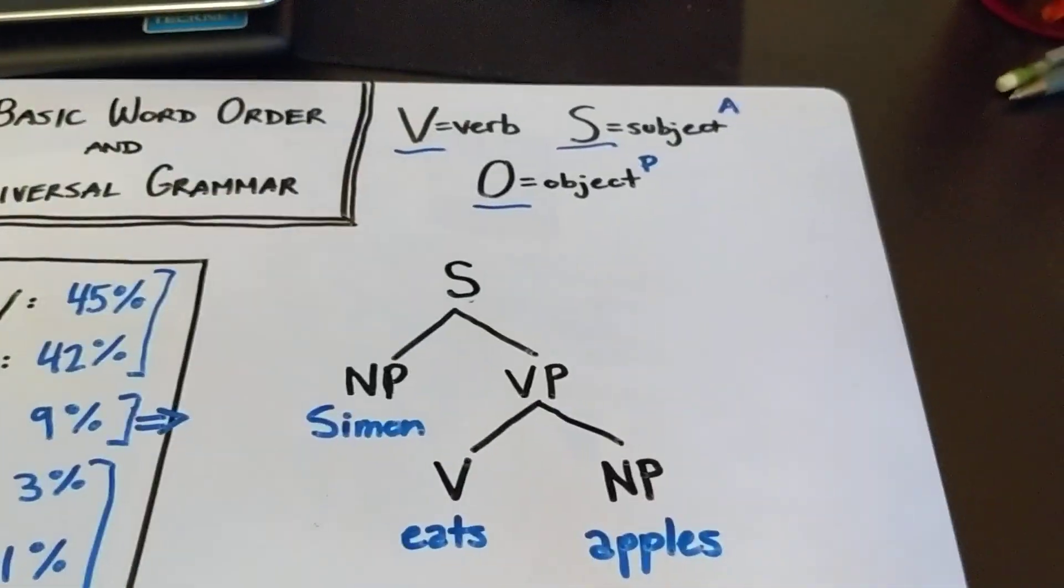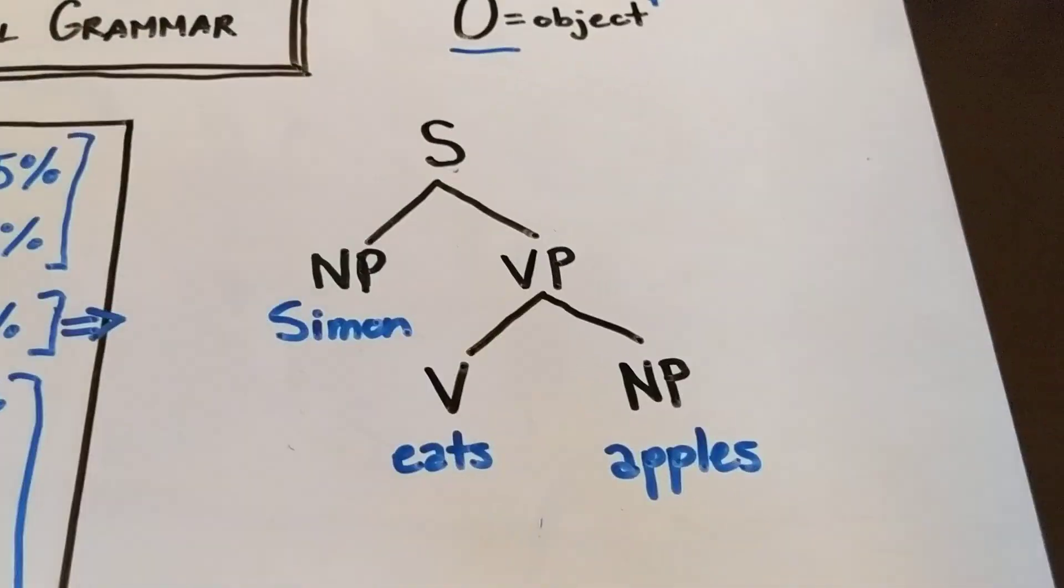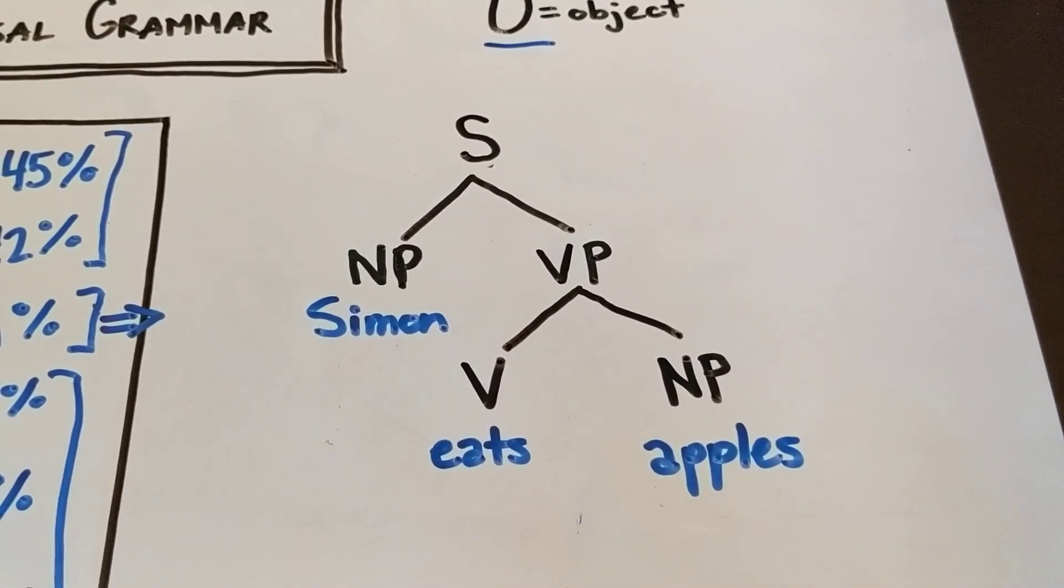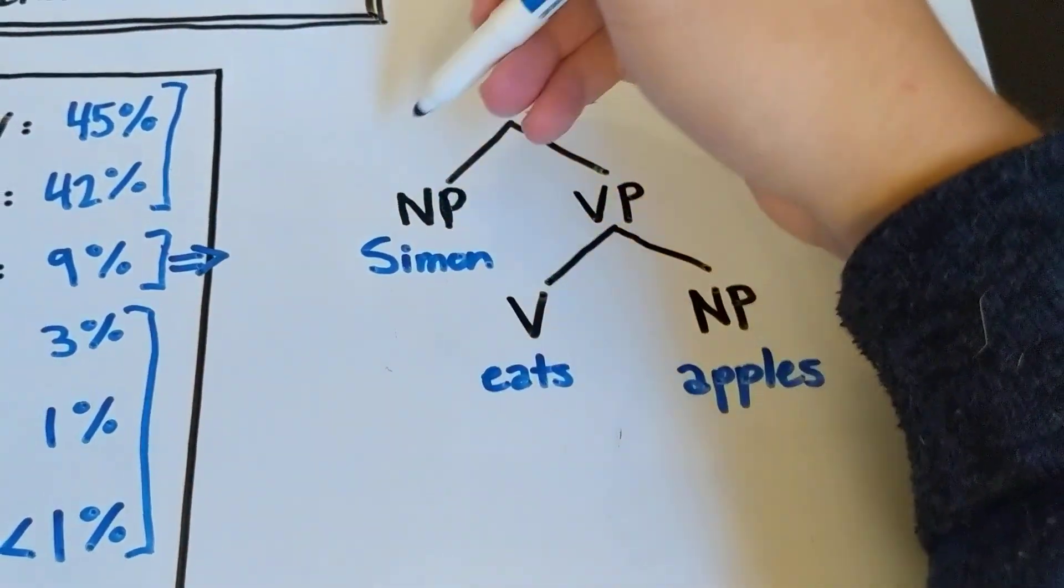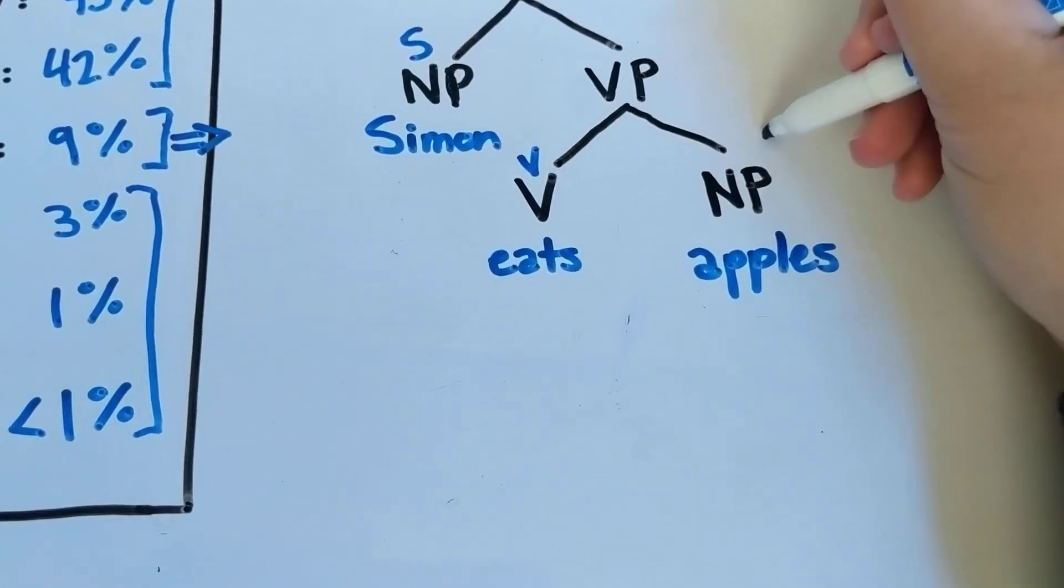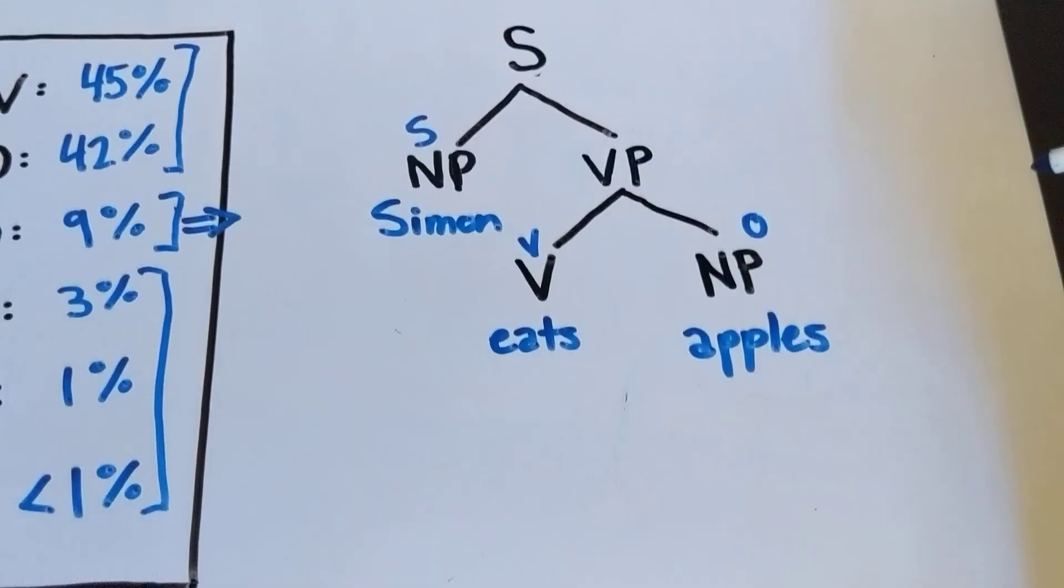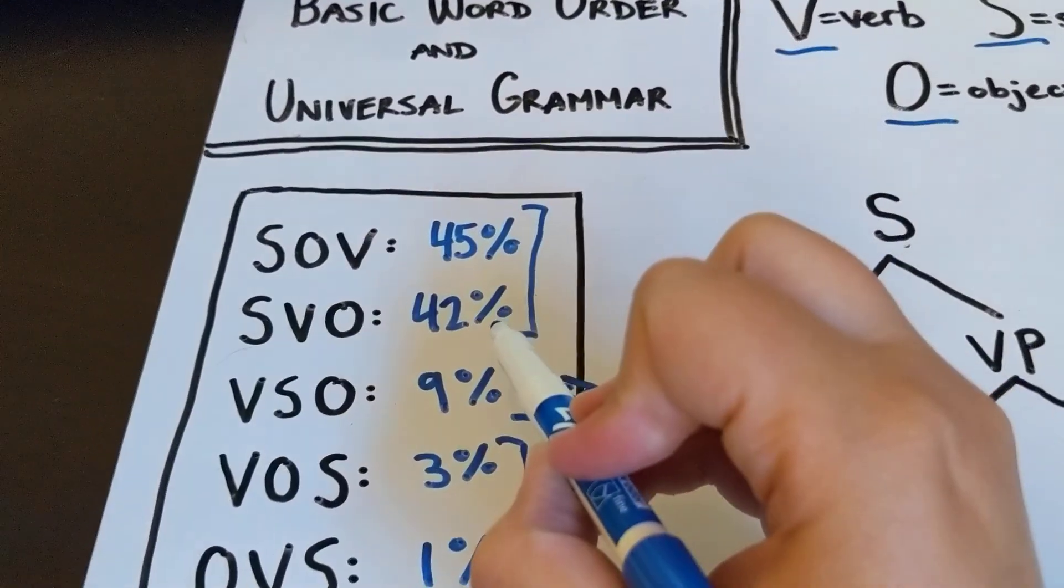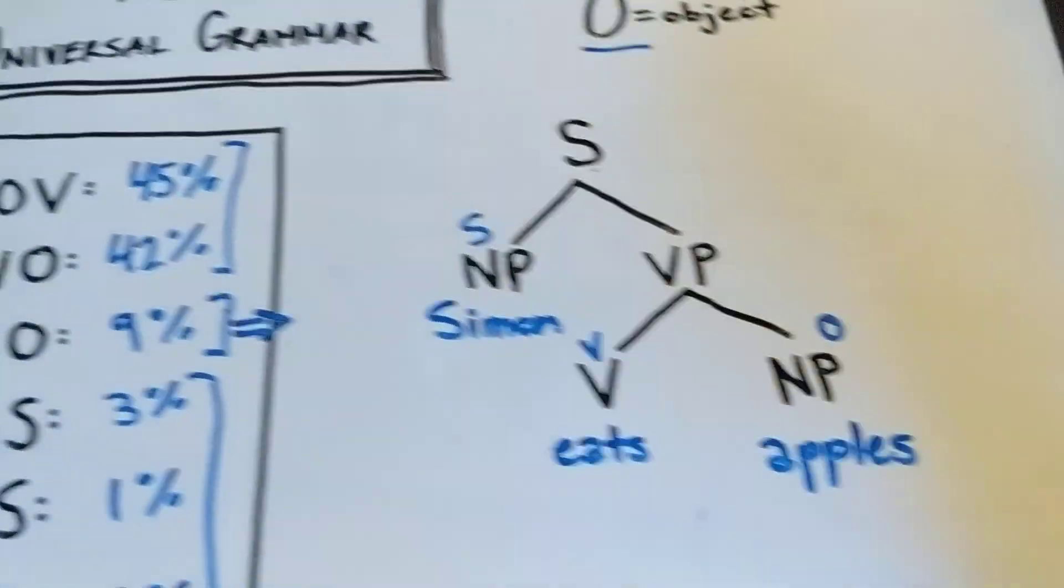So here we have a lovely, very simplified syntax tree of English for the sentence Simon Eats Apples. We have here an S, a V, and an O. English is an SVO language, which puts it in this category with 42% of the world's languages.